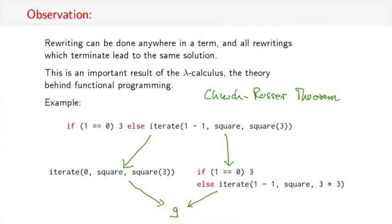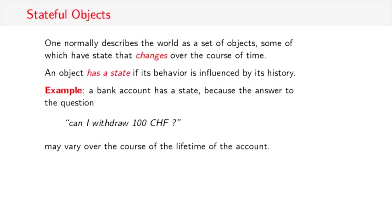Now all these observations hold in the world of pure functional programming. What I want us to do now is take a step outside that world and introduce state in objects. So why would one want to do that? Well, normally one describes the world as a set of objects, and some of these objects would have state that can change over the course of time. An object has state if its behavior is influenced by its history.